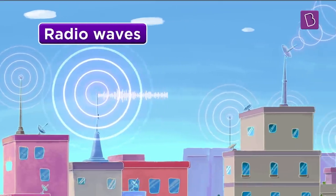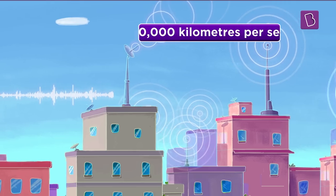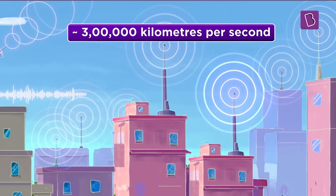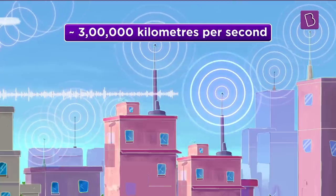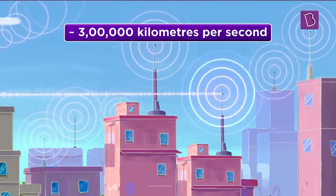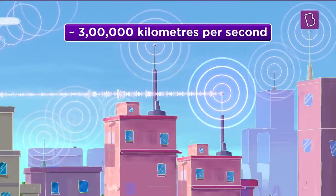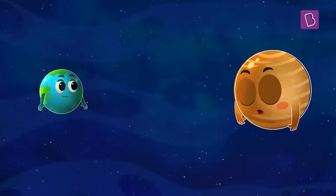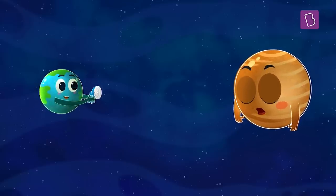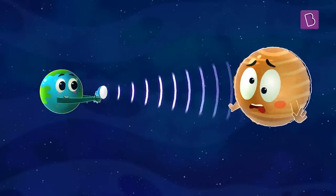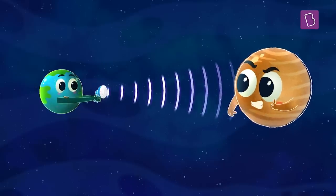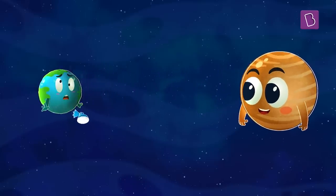Now, these waves have to travel at a speed of approximately 3 lakh kilometers per second in vacuum. That is the maximum speed, by the way, that anything can travel with. Fixed speed. Interesting. So we first send some powerful radio waves towards Jupiter. These waves should hit Jupiter, bounce off its surface and travel back to Earth.